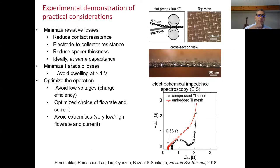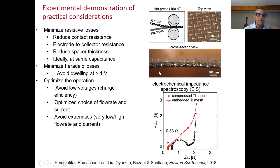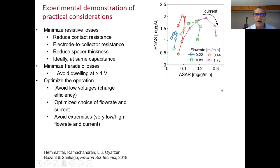We did experiments to explore these thermodynamic limits. One technique we use is embedding a titanium mesh into a porous carbon electrode to reduce contact resistance between the current collector and the ions in the pores. The key is to remove this resistance while preserving capacitance. We also minimize the spacer distance between the porous electrodes and minimize Faradaic losses by avoiding dwelling in the cycle at any time at voltages larger than about one volt. Electrical impedance spectroscopy shows that we drastically reduce the characteristic internal resistance in the CDI cell.